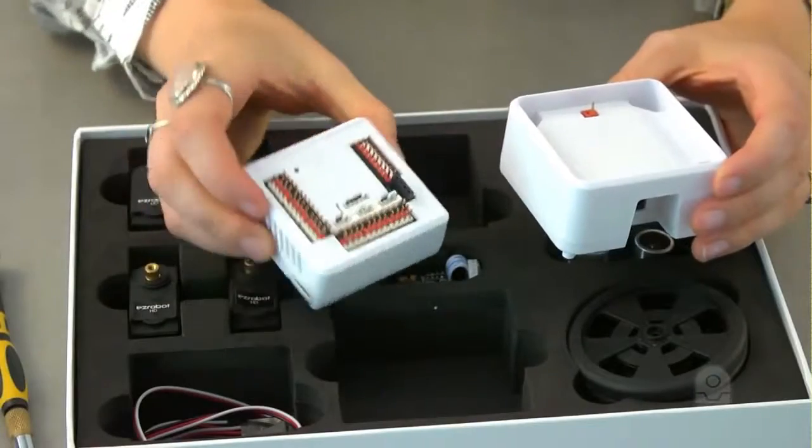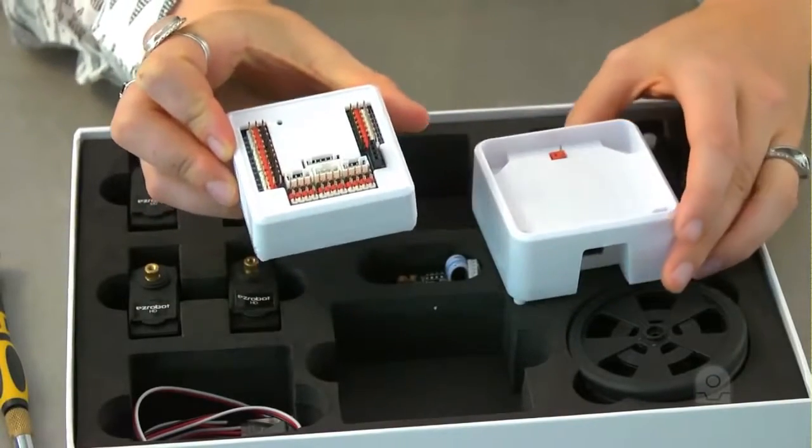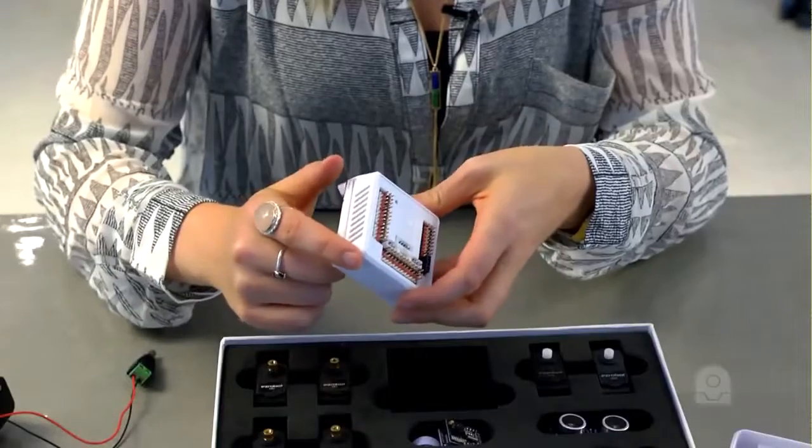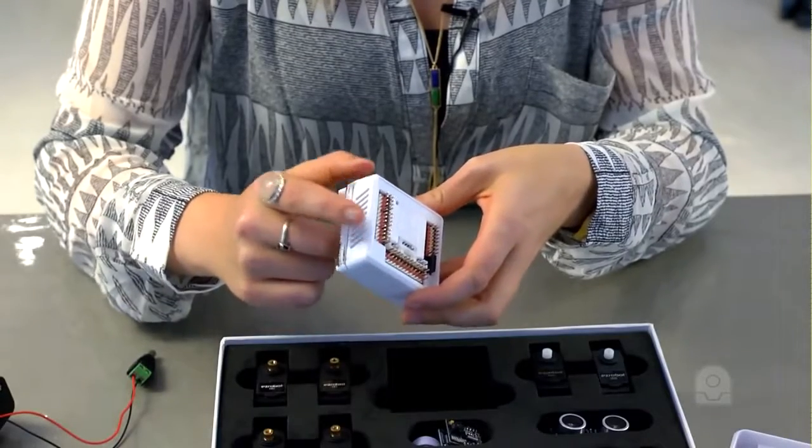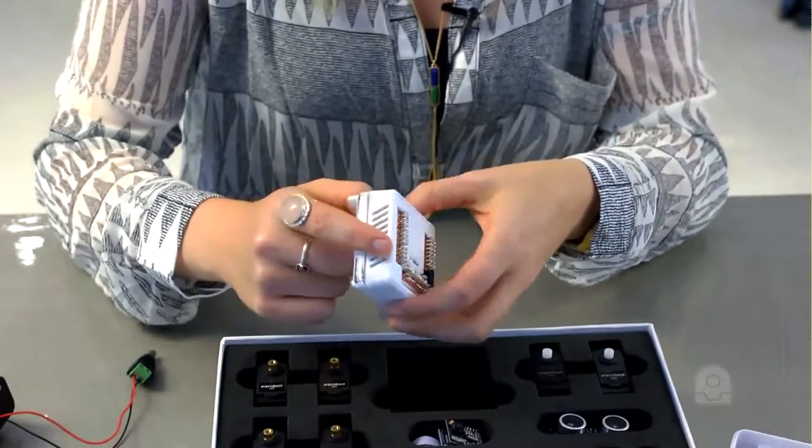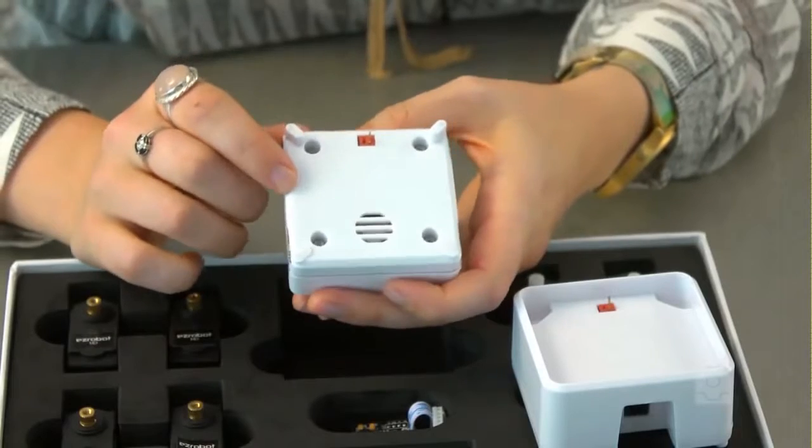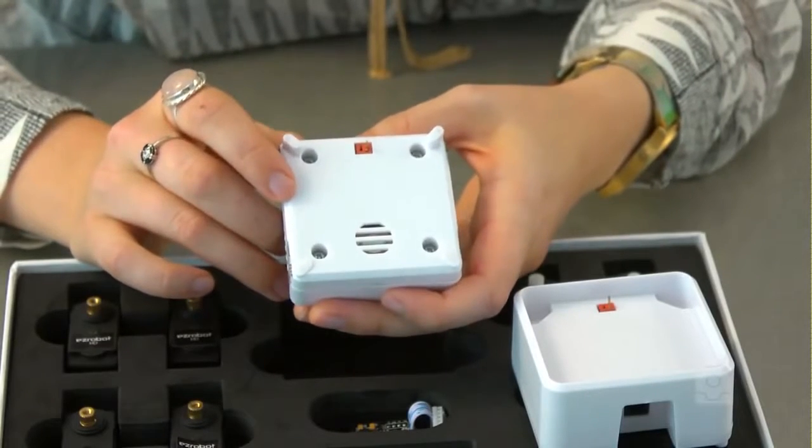This is the EZB V4 Wi-Fi robot controller. The top of the controller has the input and output connections for servos, cameras, and accessories. The bottom of the controller has the power plug and speaker for streaming audio and speech.